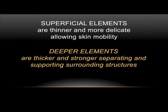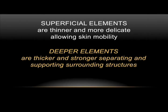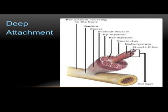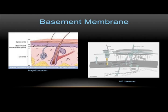The basement membrane is a thin sheet of fibers, a mat-like structure upon which the epithelium — which lines the cavities and surfaces of organs including skin — or the endothelium, which lines the interior of blood vessels, lies. You can see in the picture where that gives a break between the skin level and the superficial fascia below. The deep attachment picture shows that attachment strength and fluid connection throughout.